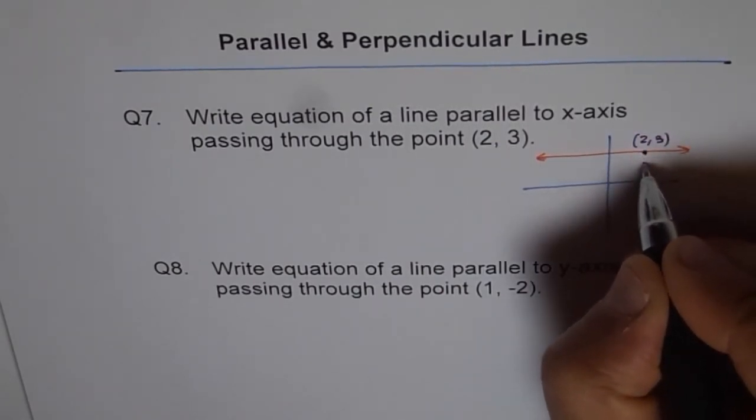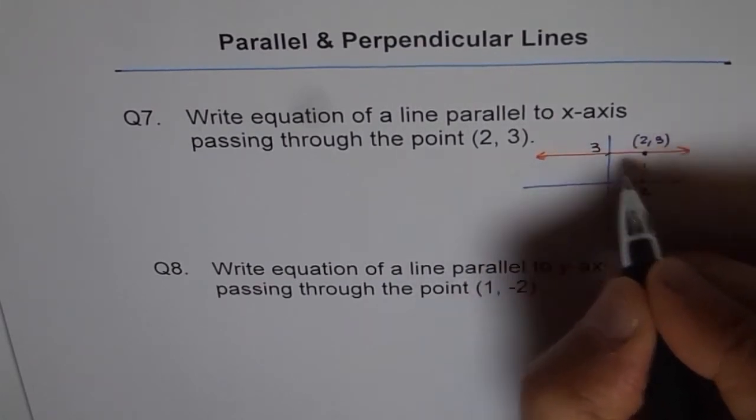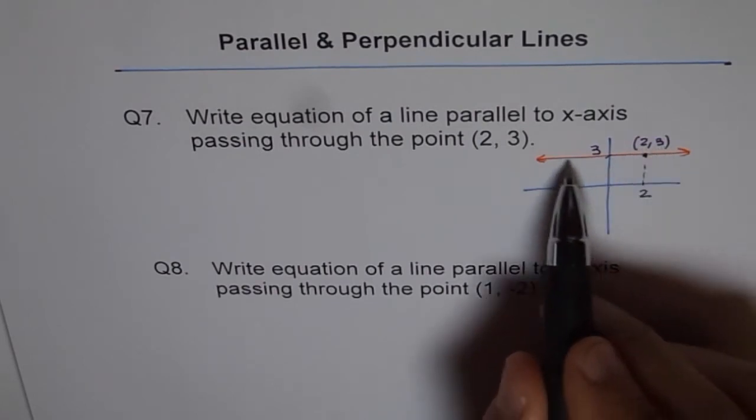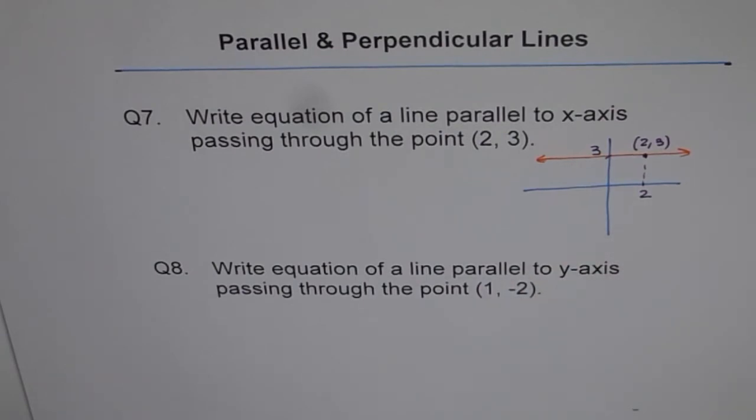It means what? It means x-axis value is 2 and y is 3. And you get a coordinate and that point (2, 3) lies on a line. And you can see this line is parallel to x-axis, correct? Now the question is, what is the equation of this line? So what should be the equation of this line?